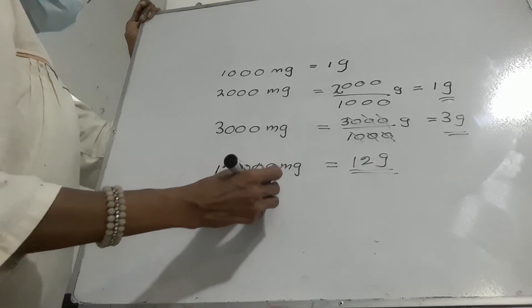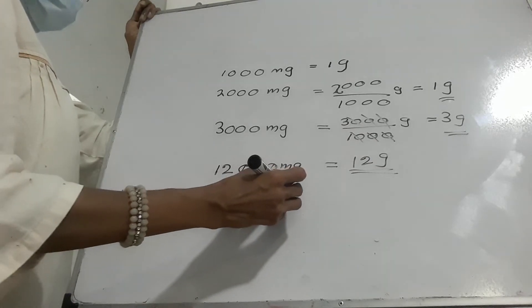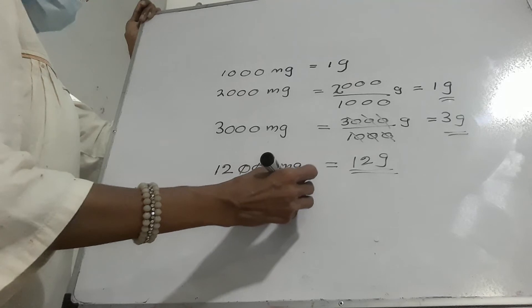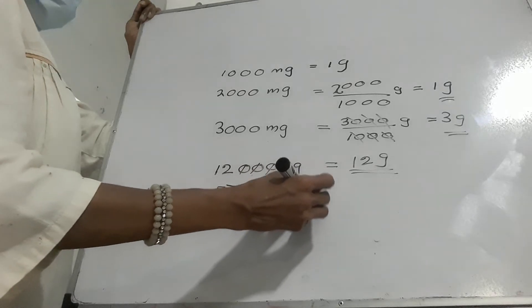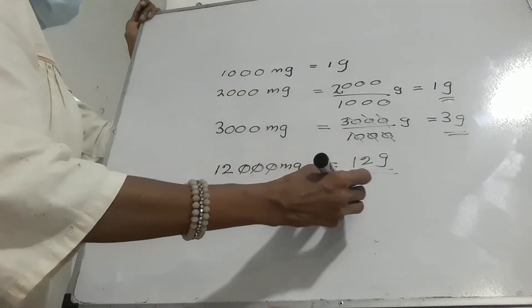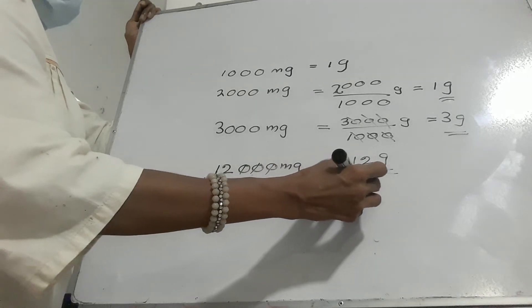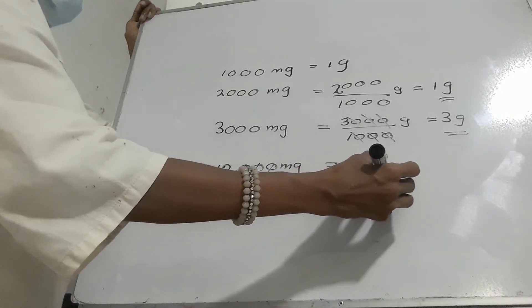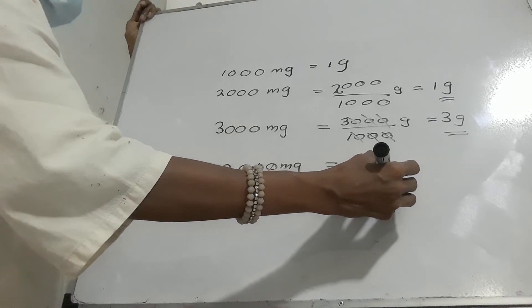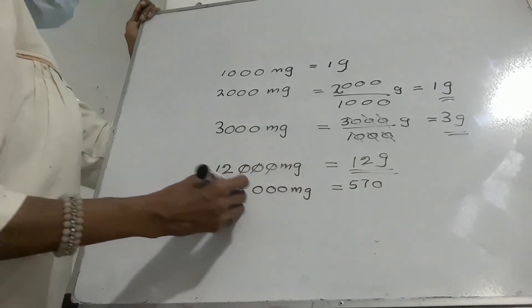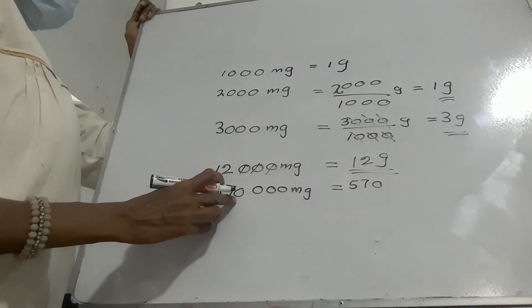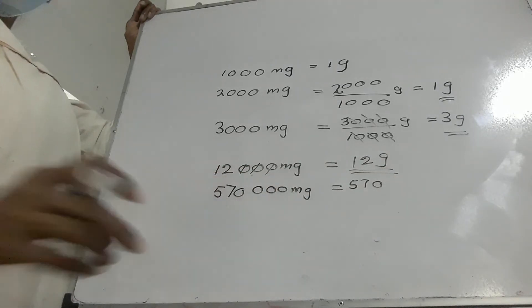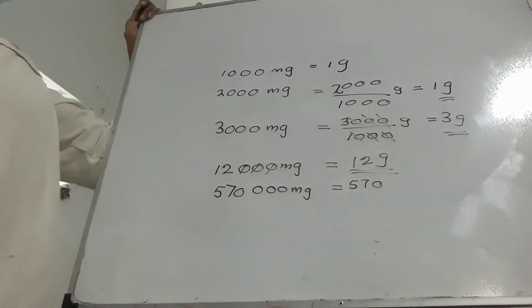570 milligrams is equal to 570,000 milligrams.